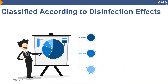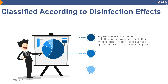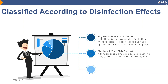Classified according to disinfection effects — High efficiency disinfectant: preparations capable of killing bacterial propagules, including mycobacteria, viruses, fungi and their spores, as well as bacterial spores and pathogenic spores, to meet requirements for highly effective disinfectant. Medium efficiency disinfectant: preparations capable of killing microorganisms such as mycobacteria, fungi, viruses, and bacterial propagules. Low efficiency disinfectant: preparations capable of killing bacterial propagules and lipophilic viruses to meet requirements for general disinfectant.